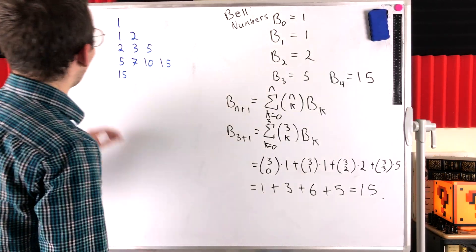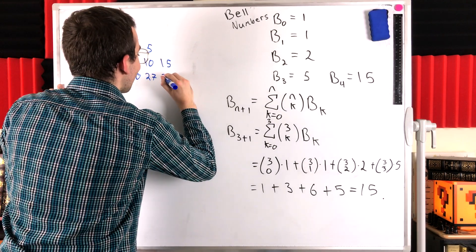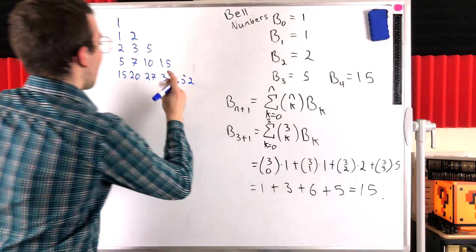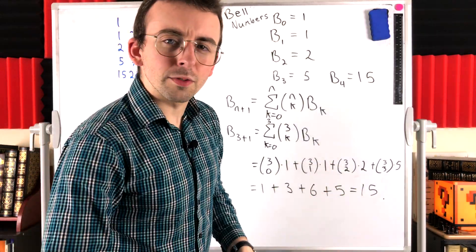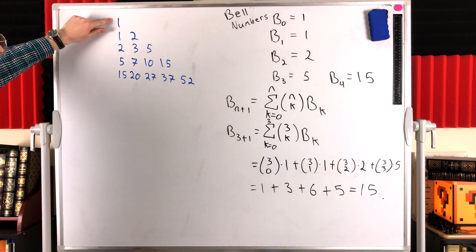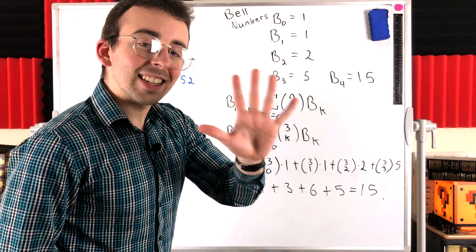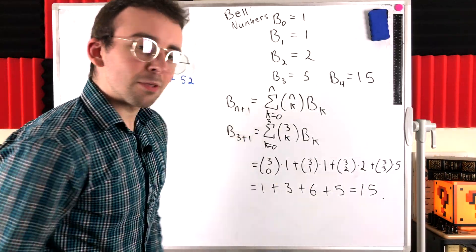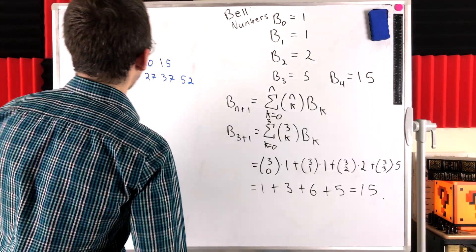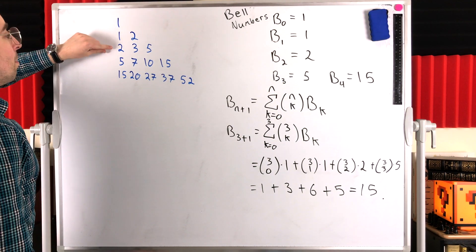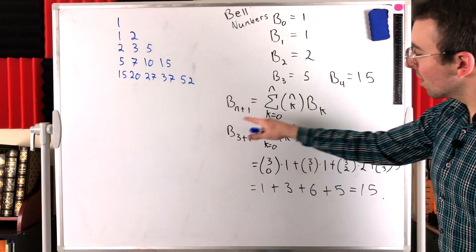Continuing: row 5 starts with 15, then 15+5=20, then 20+7=27, then 27+10=37, then 37+15=52. We'll stop there. Notice the Bell numbers appear going down the left side and down the diagonal: b0=1, b1=1, b2=2, b3=5, b4=15. And spoiler alert — the number of ways to partition a set containing five elements is 52, which is b5. Instead of writing out all 52 partitions, you can just use this triangle. That sure is a lot easier. That's Bell's Triangle — along with the recurrence relation and our examples of counting partitions of sets.